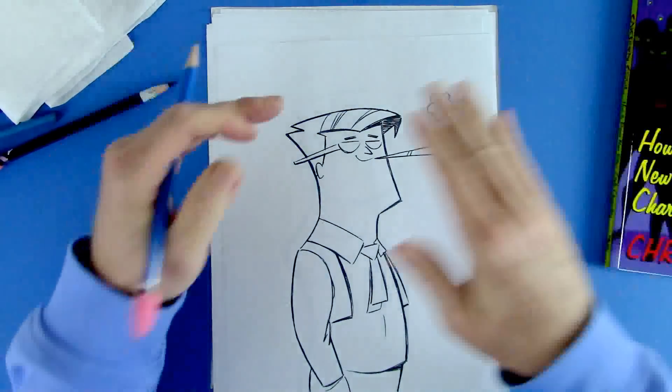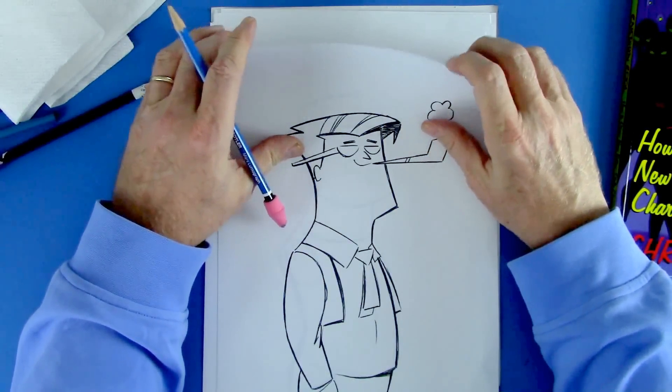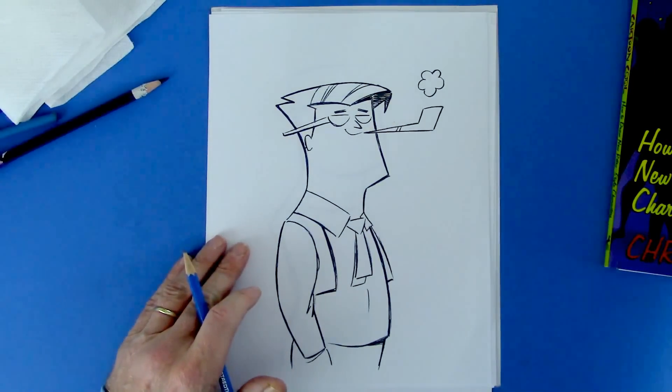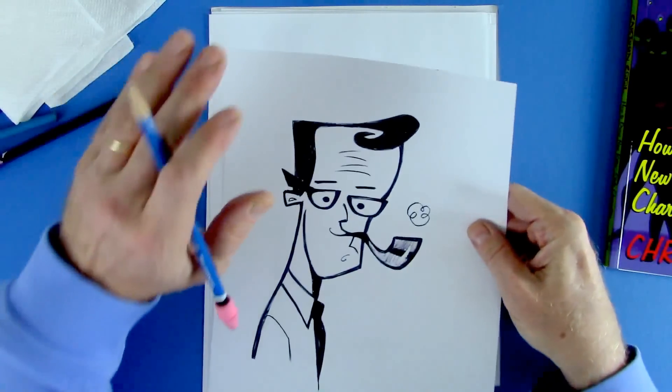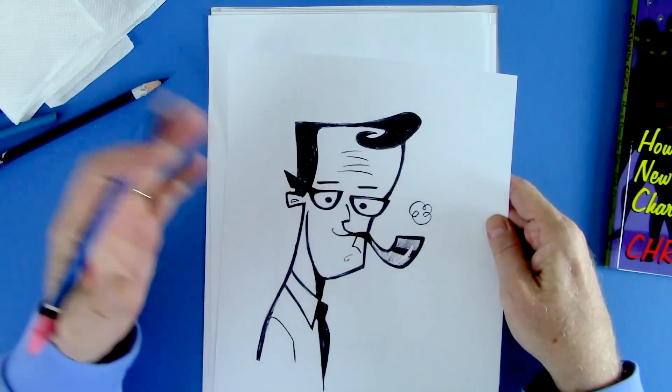We're going to start with a stereotypical character, a dad type of character. Here is dad, but he used to look like this. These are my original unpublished drawings just for the videos.